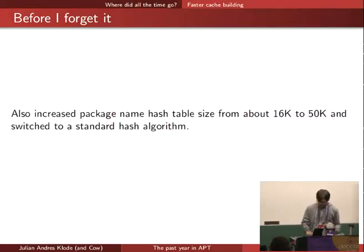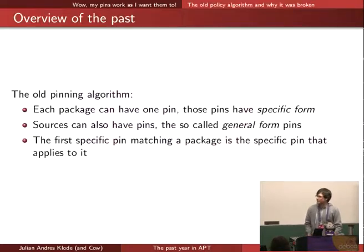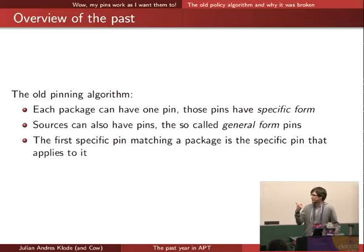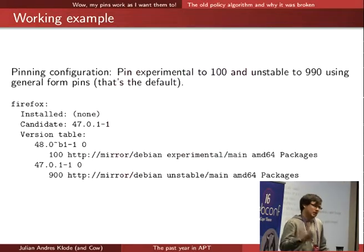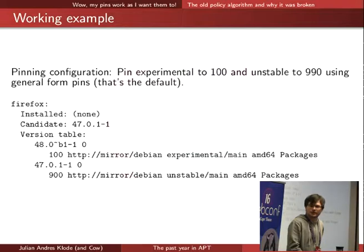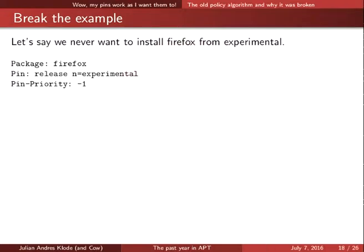One thing I really liked working on in apt 1.1 was pinning. Pinning did not really work that well in the past. In the old algorithm, each package has one pin — specific-form pins for packages, and general-form pins for sources (the package colon star pins). The first specific pin matching a package was the pin that applied. For example, if Experimental is pinned to 100 and Unstable is pinned to 900, it picks correctly the Unstable version of Firefox. But if you tried to pin Firefox from Experimental to minus one to block it, it also blocked the Unstable version — apt would say it doesn't want to install any of those versions.